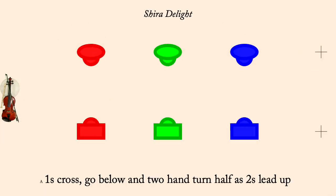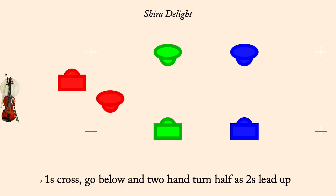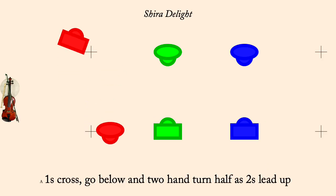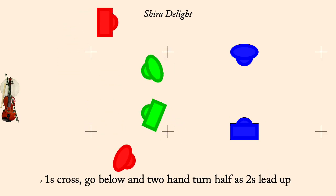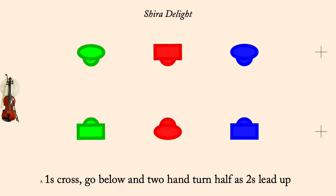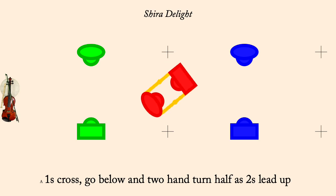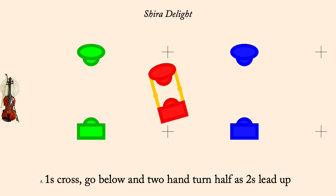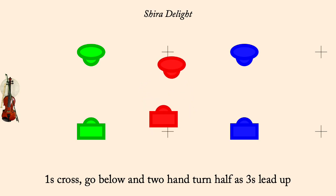Ones cross, go below, and two-hand turn half as twos lead up. Ones cross, go below, and two-hand turn half as threes lead up.